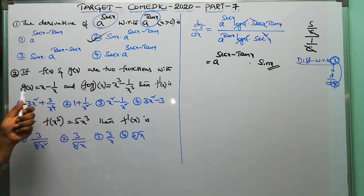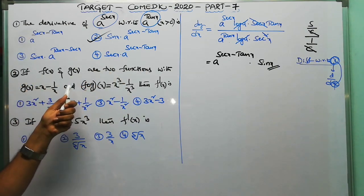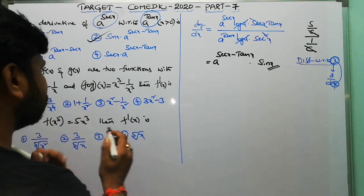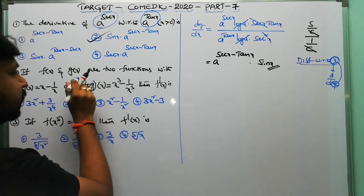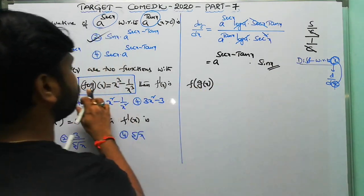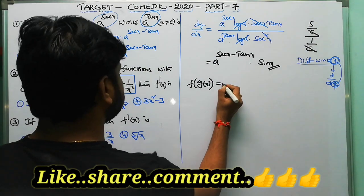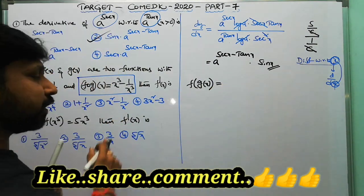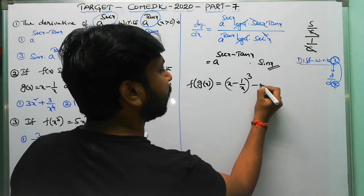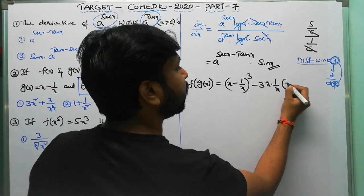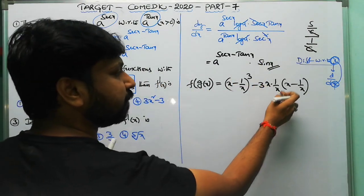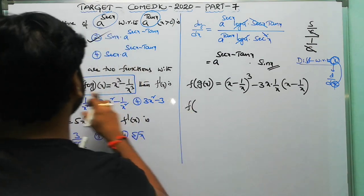Next question: if g(x) = x − 1/x and f(g(x)) = x³ − 1/x³, find f'(x). Note that x³ − 1/x³ can be written using the identity a³ − b³ = (a−b)³ + 3ab(a−b), so x³ − 1/x³ = (x − 1/x)³ − 3·(x − 1/x).